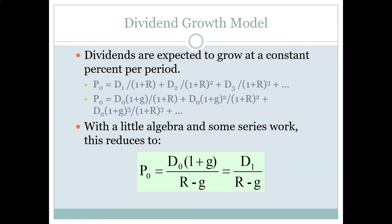Now the dividend growth model, as you've seen in the example that we worked, is simply the growing perpetuity model where we've changed the cash flows to specifically represent the dividend. And so we can say that the price at any time zero is equal to the next period's dividend divided by the discount rate minus the growth rate. And here in this formula, I've also given you the way to estimate the growth of a dividend from one period to the next. So if you're given a dividend in the last period, you know how to calculate the dividend in the next period, which is to multiply it by one plus the growth rate. So this is the model you're going to use.